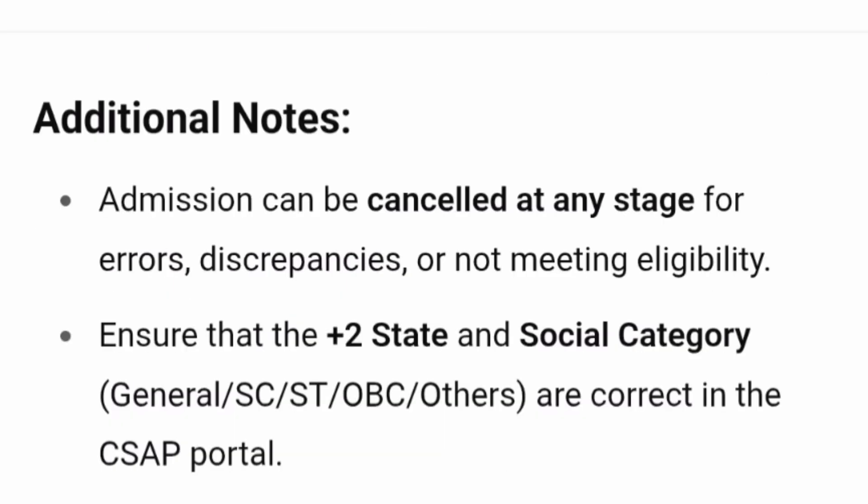An important note: admission can be cancelled at any stage if you provide wrong information, errors, or discrepancies, or if you do not meet the conditions. You must ensure that your Plus Two state and social category are correctly mentioned. Your home state — where you studied Class 11 and 12 — must be correct. Social category can be General, SC/ST, OBC, or Others, and it should be correctly entered in the CSEF portal.